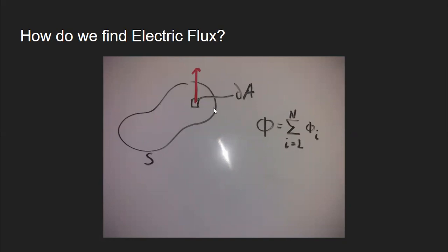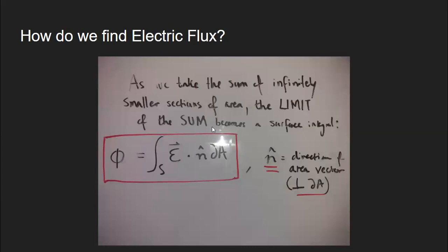The flux is the dot product between the area vector and the electric field vector, and therefore the electric flux in total is the sum of all of the dot products between infinitesimal pieces of area and the electric field vectors.